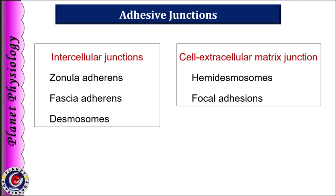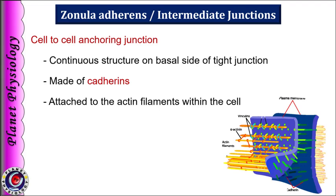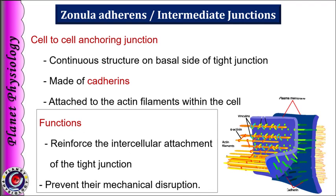Now coming to the adhesive junctions. They include intercellular junctions as well as cell-to-extracellular matrix junctions, subdivided according to the extent and location of contact. Zonula adherens is also called the intermediate junction, located just basal to the tight junctions. They are mainly formed by cadherins. Extracellular domains of cadherins form calcium-dependent homodimers with adjacent cells, while cytoplasmic domains attach to actin through catenins. In this region there is an intercellular space of about 20 nm. Zonula adherens reinforces intercellular attachments of tight junctions and prevents them from mechanical disruption.